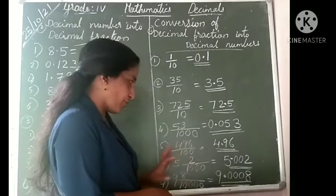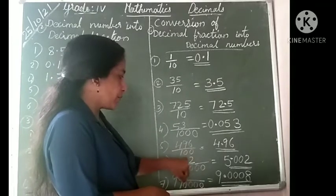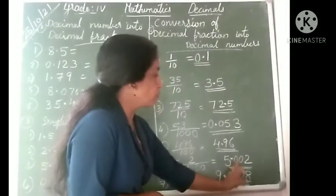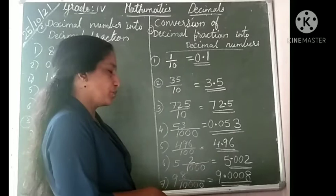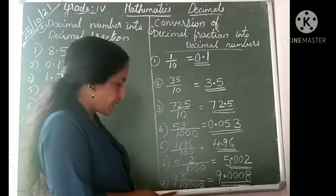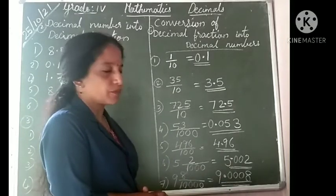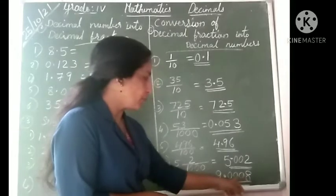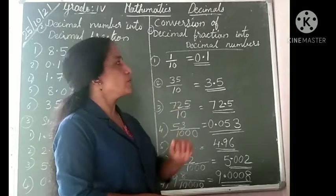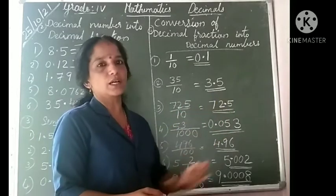These last two questions are mixed fraction type. First write the whole part and point, then look at the fraction. For 5 and 2/1000: denominator 1000 has three zeros, only 1 digit available, so put 2 more zeros — answer is 5.002. For 9 and 8/10,000: 10,000 has four zeros, only digit 8 available, so put 3 zeros to the left — answer is 9.0008. When converting decimal fractions to decimal numbers, always check the denominator. According to the number of zeros in the denominator, place the decimal point.